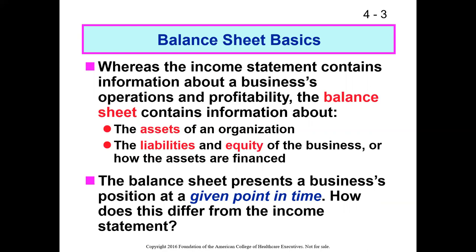Continuing the metaphor, an income statement is more like your W-2, which tells you how much money you earned over the course of a year. A bank statement gives a snapshot of what you had on January 1st and what you have today, while the W-2 tells you how much you earned over time. That's the basic difference between a balance sheet and an income statement.